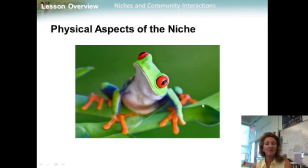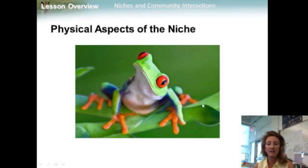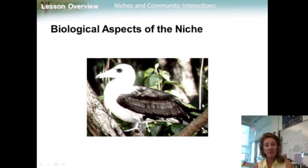For plants, resources include sunlight, water, and soil nutrients. For animals, resources include nesting space, shelter, types of food, and feed. Part of an organism's niche involves the abiotic factors it requires for survival. Most amphibians, for example, lose and absorb water through their skin, so they must live in moist places. If an area is too hot and dry, or too cold for too long, most amphibians cannot survive. Biological aspects of an organism's niche involve the biotic factors it requires for survival, such as when and how it reproduces, the food it eats, and the way it obtains that food.